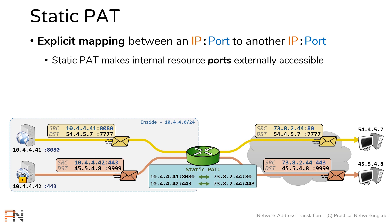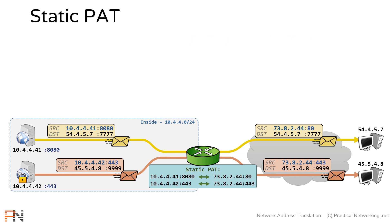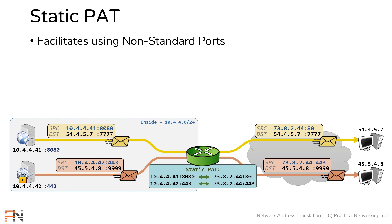That's an example of a static PAT in action. It's very similar to a static NAT, except we're also including ports in our definition. Now that you've seen static PAT in action, there are four more things to highlight. The first has to do with one of the primary purposes of static PATs: to facilitate the use of non-standard ports.